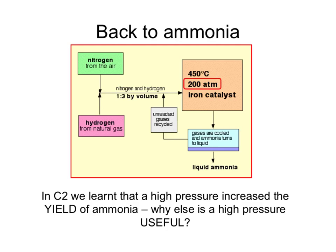But why was this high pressure important? We learned in C2 that the high pressure increased the yield of ammonia—in other words, the percentage of ammonia in the mixture. But there's another reason why a high pressure is useful.